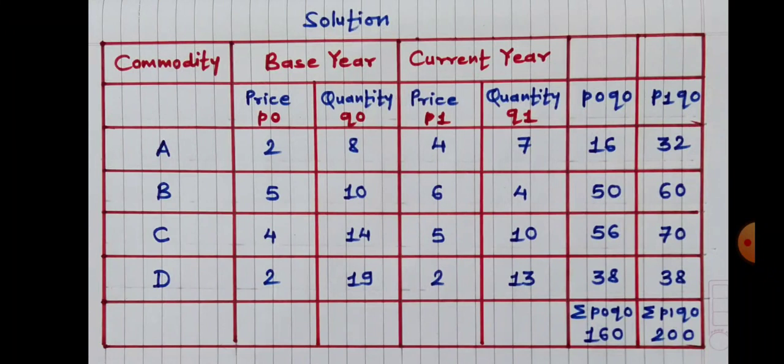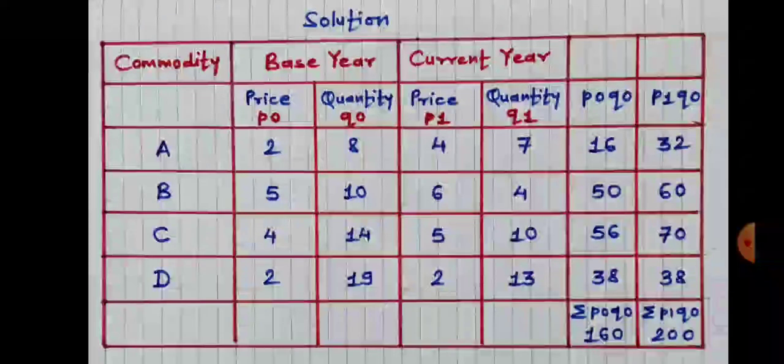After finding out the values of P0Q0, we have to find out Sigma P0Q0, which is the summation of all P0Q0. So 16 plus 50 plus 56 plus 38, we get 160. Therefore Sigma P0Q0 is equal to 160. After finding out this, we have to find out P1Q0, i.e. P1 multiplied by Q0.